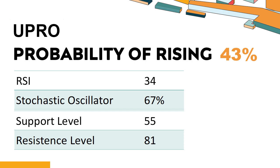UPRO's short-term support level is 61.8. If it falls below 61.8 during this session, it will have a chance to test 55. UPRO's short-term resistance level is 74.1. If it breaks through 74.1 during the session, it will look up to 81.